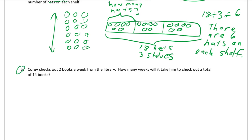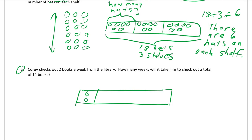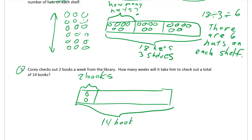Corey checks out two books a week from the library. How many weeks will it take him to check out a total of fourteen books? It doesn't say we have to do both an array and a tape diagram for this one — I'm going to use the tape diagram. We know he checks out two books a week, and there are fourteen books total. We know how many books there are — fourteen — but what we don't know is how many weeks, so that's a question mark.